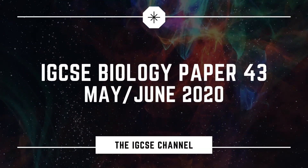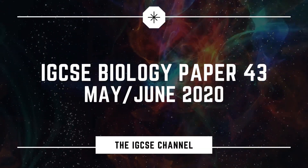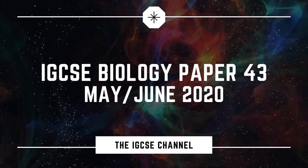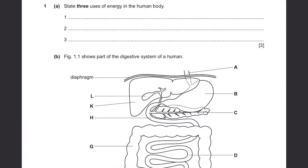Cambridge IGCSE Biology, May June 2020, Paper 43. Question 1: State 3 uses of energy in the human body.